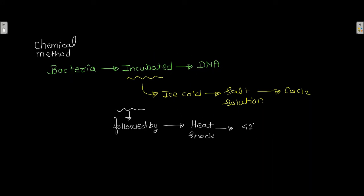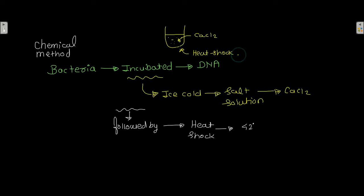In a tube, you put your bacteria and your DNA together in a salt solution containing CaCl2, then you give the tube a heat shock at 42 degrees Celsius. As a result, the DNA present in the solution enters into the bacteria, and that is how transformation takes place.